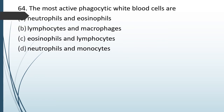Question No. 64: The most active phagocytic WBC cells are — neutrophils and eosinophils, lymphocytes and macrophages, eosinophils and lymphocytes, or neutrophils and monocytes? The correct answer is Option D: neutrophils and monocytes are the most active phagocytic WBCs.